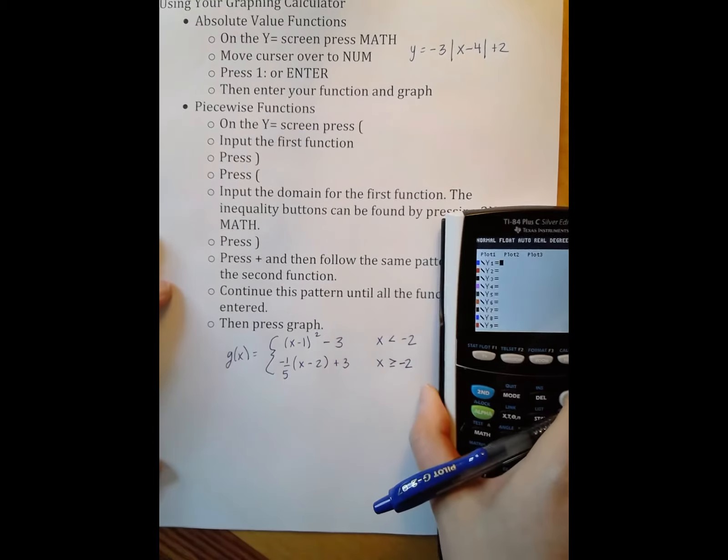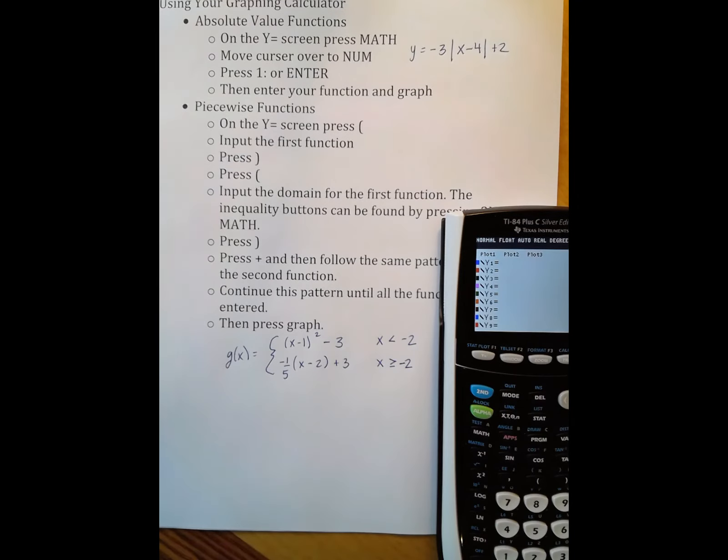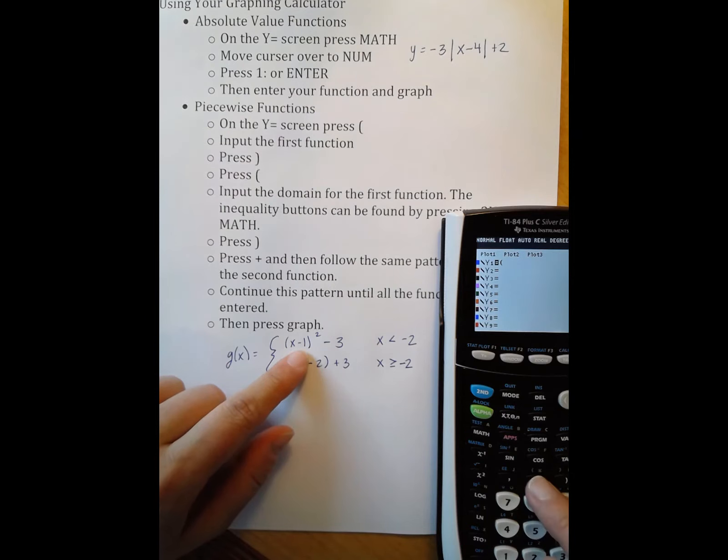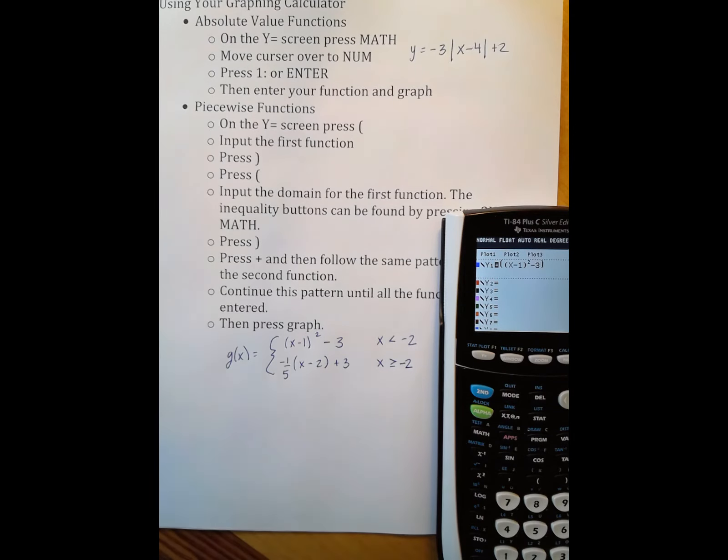Now, this is a little bit more complicated. The instructions are printed out here, but I'm going to walk through them. First, I'm going to start by opening parentheses. I'm going to input my first function. So my first function includes parentheses again, so I have parentheses x minus 1, close parentheses, squared minus 3. Then I close parentheses. So the first part is input within parentheses your first function.